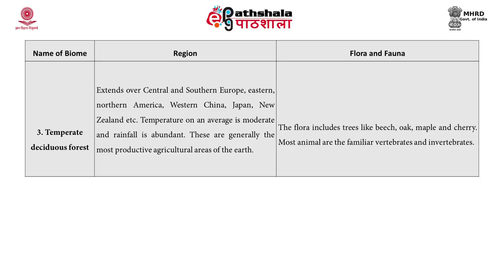Third, temperate deciduous forest: found in central and southern Europe, eastern northern America, western China, Japan, and New Zealand. The temperature on average is moderate and rainfall is abundant. These are generally the most productive agricultural areas of the earth. The flora includes trees like beech, oak, maple, and cherry. Most animals are familiar vertebrates and invertebrates.